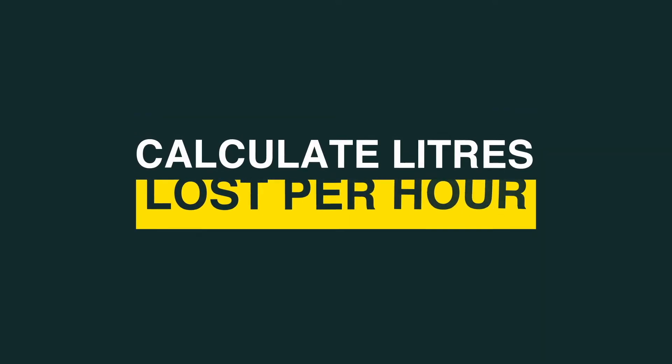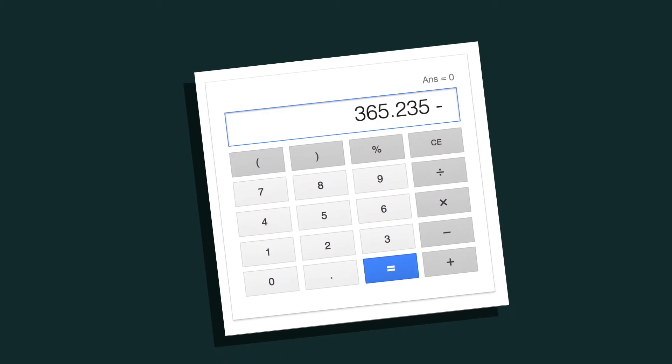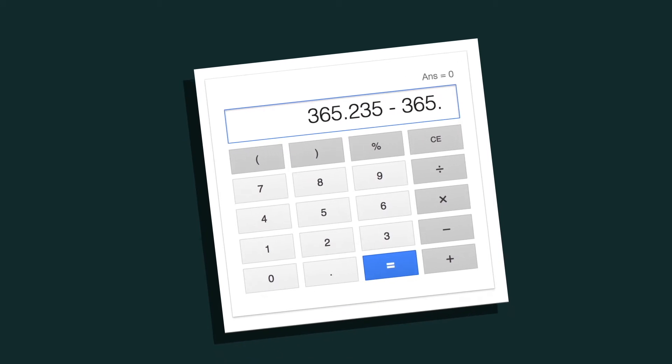You can calculate how many litres have been lost every hour by following this simple calculation. Take the first reading and subtract the number from the second reading. Multiply this by 1000 to get the number in litres. Divide the number of litres by the number of hours in between the two readings.